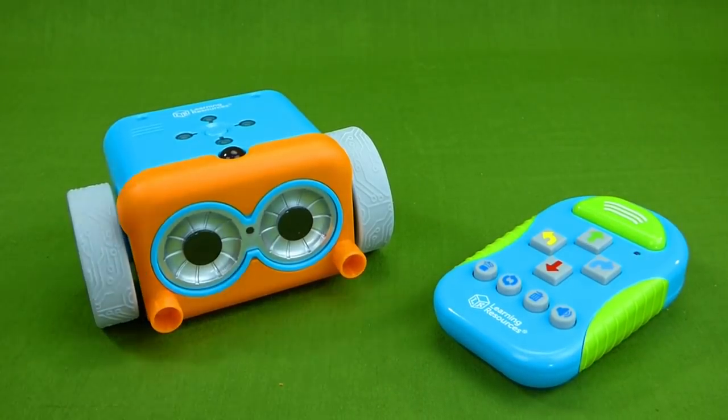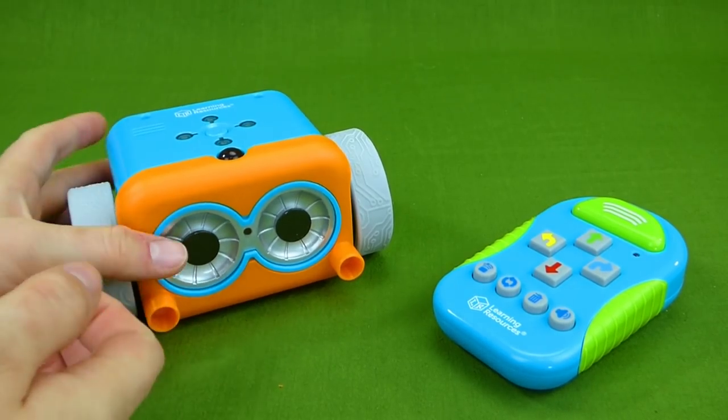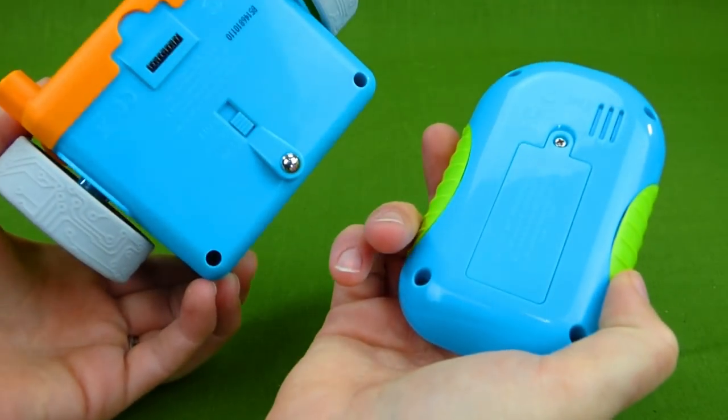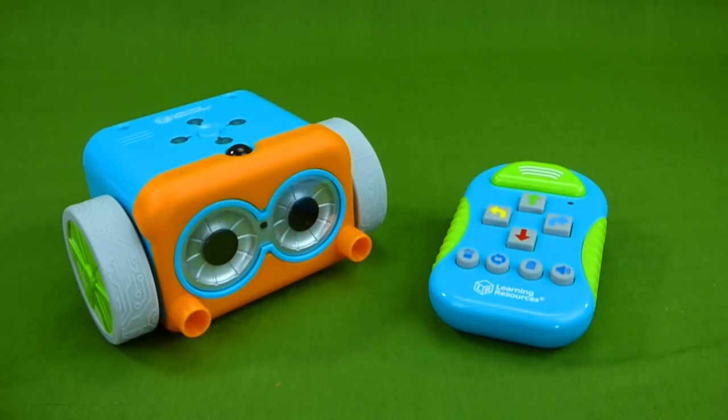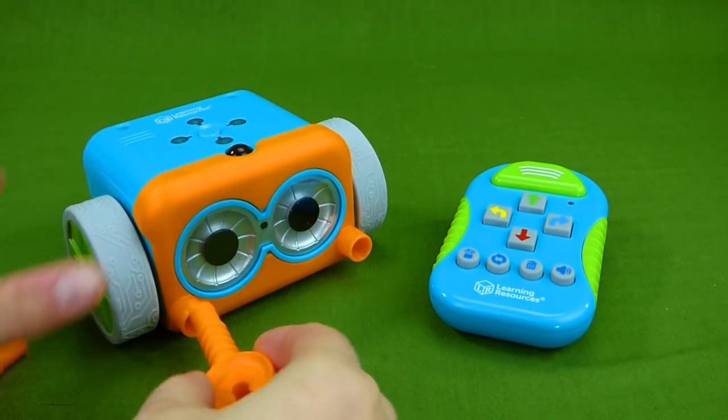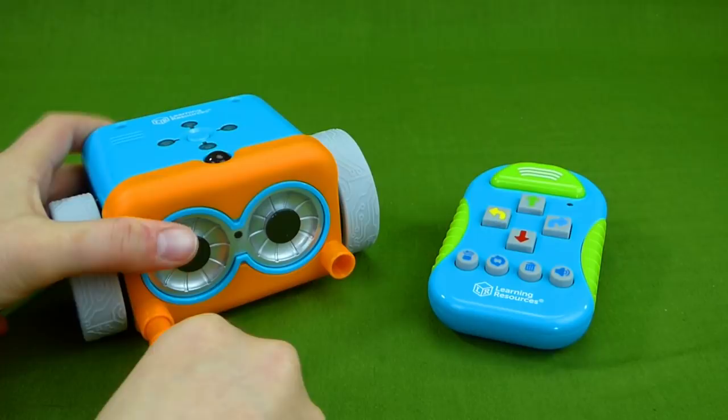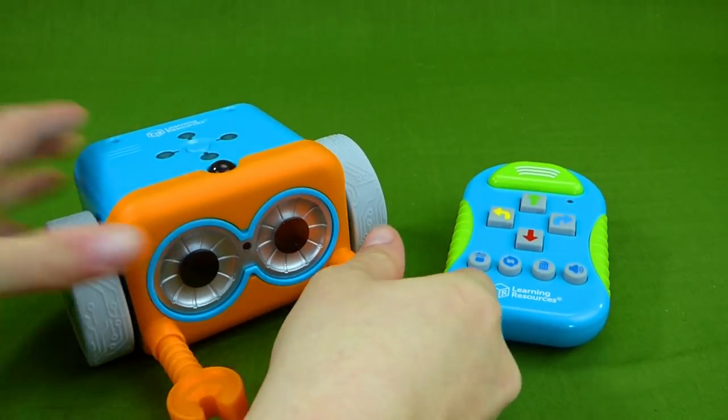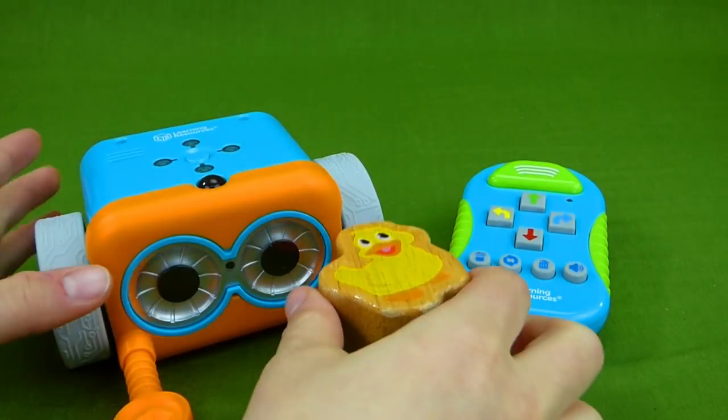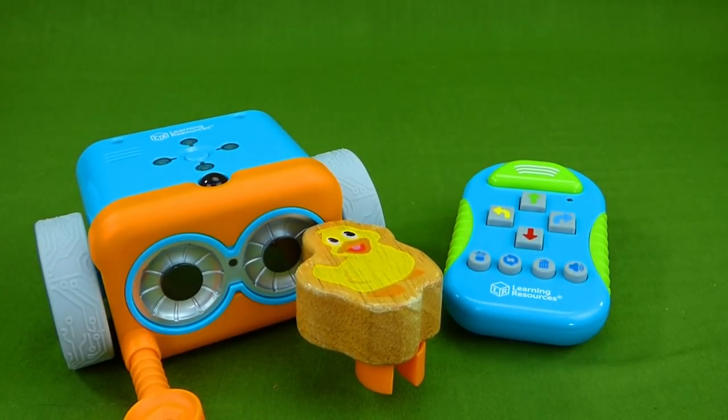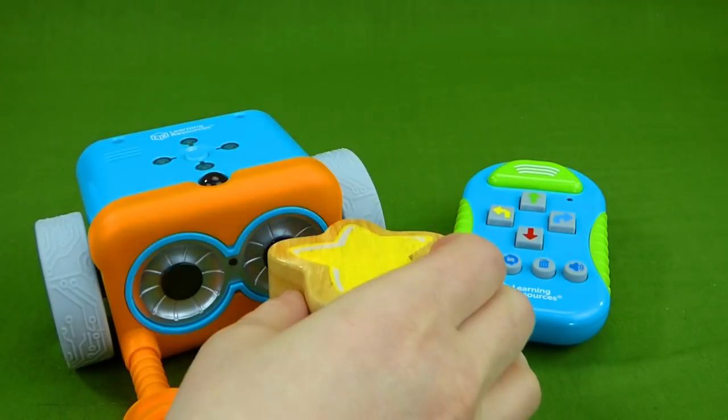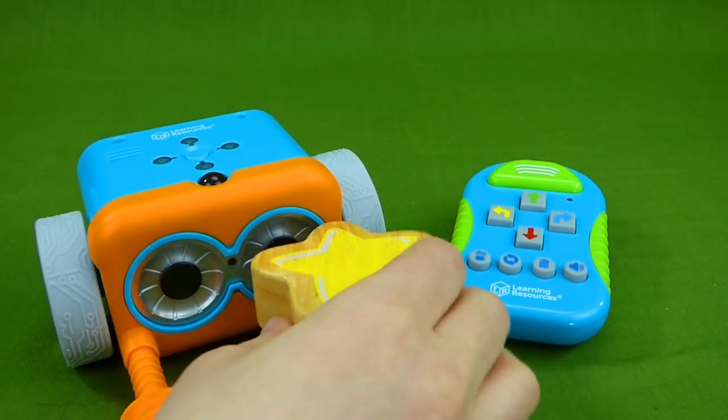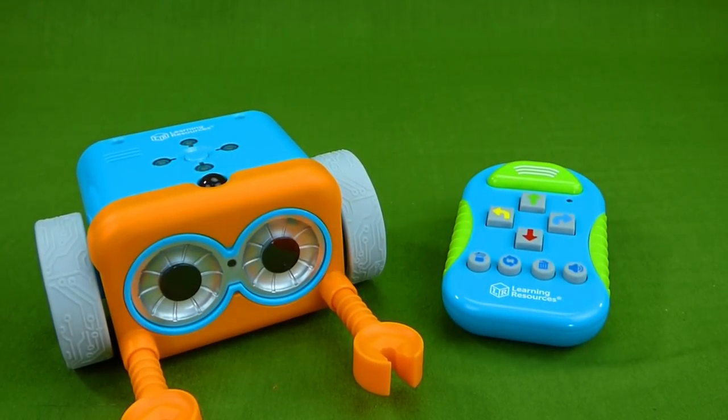When I first got him out of the box, it looked like this. I had to put batteries in here and in here. And they take triple A's. And then you have the arms that you can add so that he can carry things on his missions. And there we go. And we've got some little blocks here. He can carry the little rubber duck. Or he can carry the star. So lots of different things like that that he can carry.